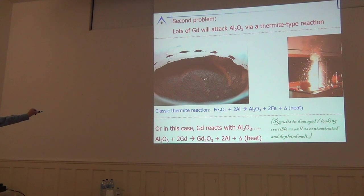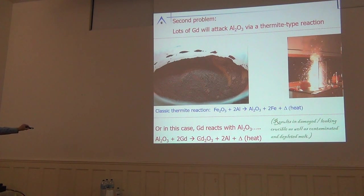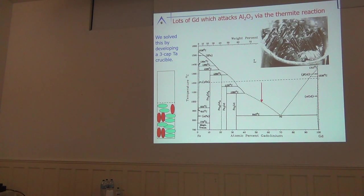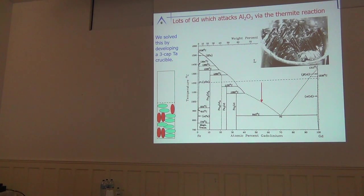The thermite mechanism moves oxygen from iron oxide to aluminum oxide because it's more stable. Unfortunately, aluminum oxide is less stable than gadolinium oxide, so with a lot of gadolinium you can react with and destroy your alumina crucible. Since this growth uses lots of gadolinium, we need to use a tantalum crucible instead: take a tantalum tube, weld a cap on the bottom and top. If you want to decant by centrifuge, take another cap, drill holes in it to act as a filter, and you can centrifuge the assembly.